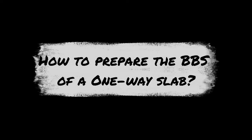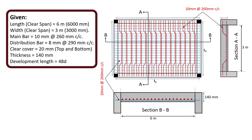Now let's understand how to prepare the bar bending schedule of a one-way slab with the help of an example. The given data: length of slab is 6 meters, width of slab is 3 meters. The slab is provided with 10 mm main bars at a spacing of 260 mm, and 8 mm distribution bars at a spacing of 290 mm center to center. The clear cover is 20 mm, overall thickness is 140 mm, and the development length is assumed to be 48D.